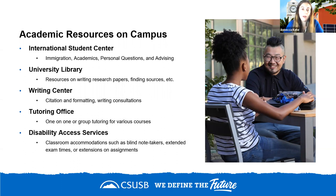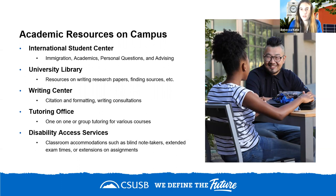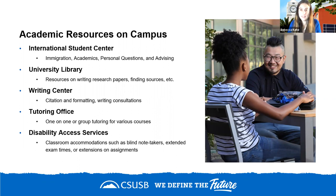The university library is a great resource — not just for finding sources for papers, but for learning how to find sources. If you need very specific information, such as cybersecurity trends in the Middle East, librarians can guide you to the right sources. Many libraries also offer workshops on study skills and study groups, making them a valuable place for academic support.